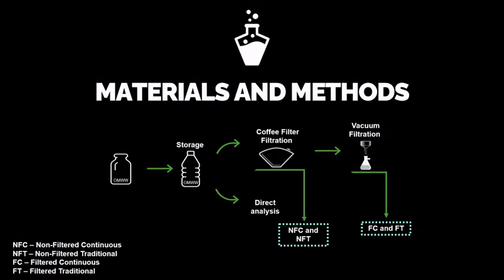For this work, two olive mill wastewaters were obtained from a traditional discontinuous press and a three-phase centrifugal continuous system olive mill. Given their high density, both samples were first passed through a coffee filter to remove the majority of particles in suspension and then filtrated through vacuum filtration. Additionally, a subsample of the four samples was freeze-dried and submitted to lyophilization.